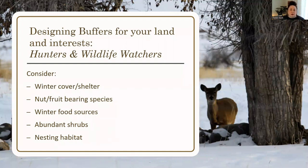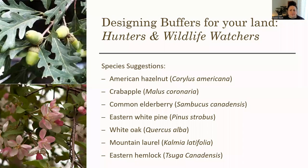If you are designing a buffer specifically for hunters or wildlife watchers, some things to consider are trees that provide winter cover and shelter, nut-bearing and fruit-bearing species that attract wildlife as a food source, winter food sources that provide food not just during the growing season but all winter long, abundant shrubs for places to hide, and nesting habitat. Species to consider are American hazelnut for the nuts, crabapple and elderberry for fruit, white pine for winter cover, white oak for the acorns, mountain laurel for that thick dense shrub layer animals can hide in, and hemlock — keeping in mind the woolly adelgid situation.